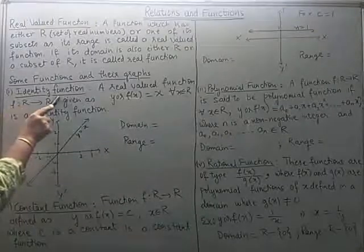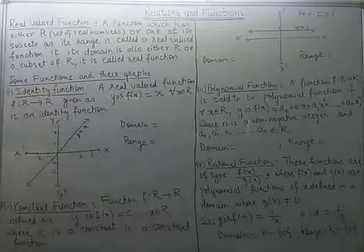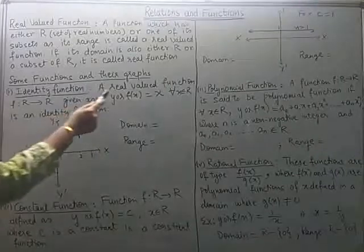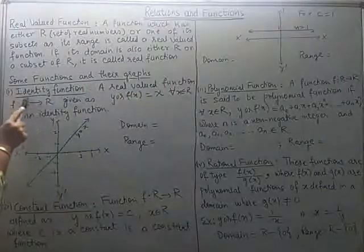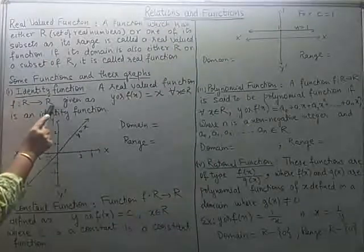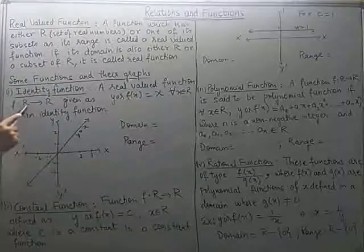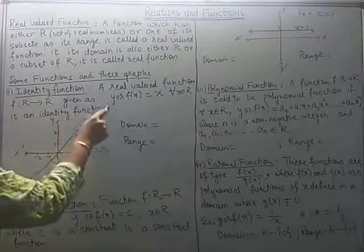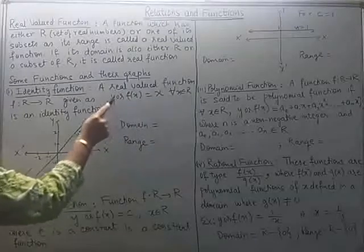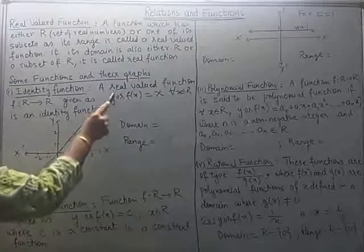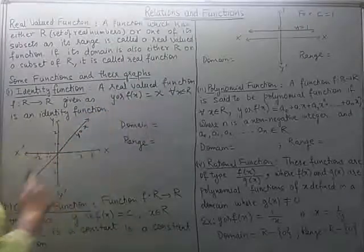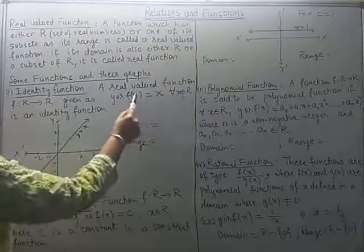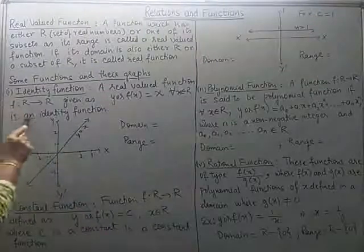The first one is the identity function. As the name suggests, something which is not changing its identity — that is how the function may be defined. A real valued function F from R to R — you can see its domain is also the set of real numbers and codomain is also the set of real numbers — is given as Y equals X, or F(X) equals X. Both notations are the same; you can use any one of them, for all X belonging to R, where X belongs to the domain.